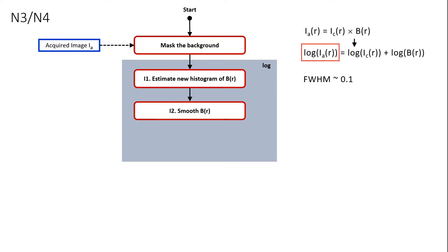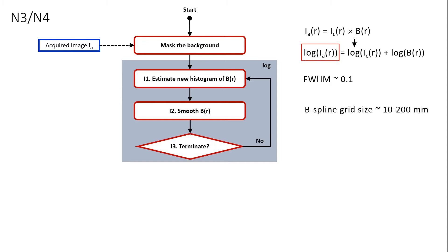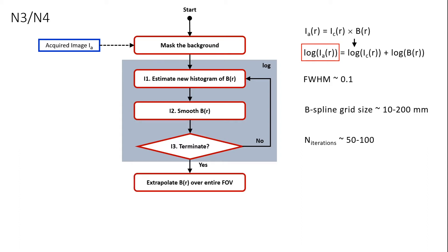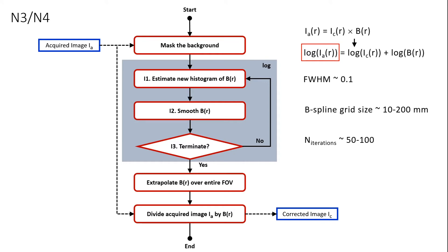In step 2, the new estimate of the bias field is smoothed by fitting it with a three-dimensional B-spline field with a specified grid. The size of the grid controls the degree of smoothing. This grid size is typically about 200 mm for images acquired with a body coil and smaller for images acquired with localized surface coils. In step 3, the termination criterion is tested against a specified threshold. In practice, the algorithm stops after a fixed number of iterations specified by the user. Once the iterations are completed, the bias field is extrapolated over the entire field of view. Finally, the original image is divided by the bias field to obtain the corrected image.